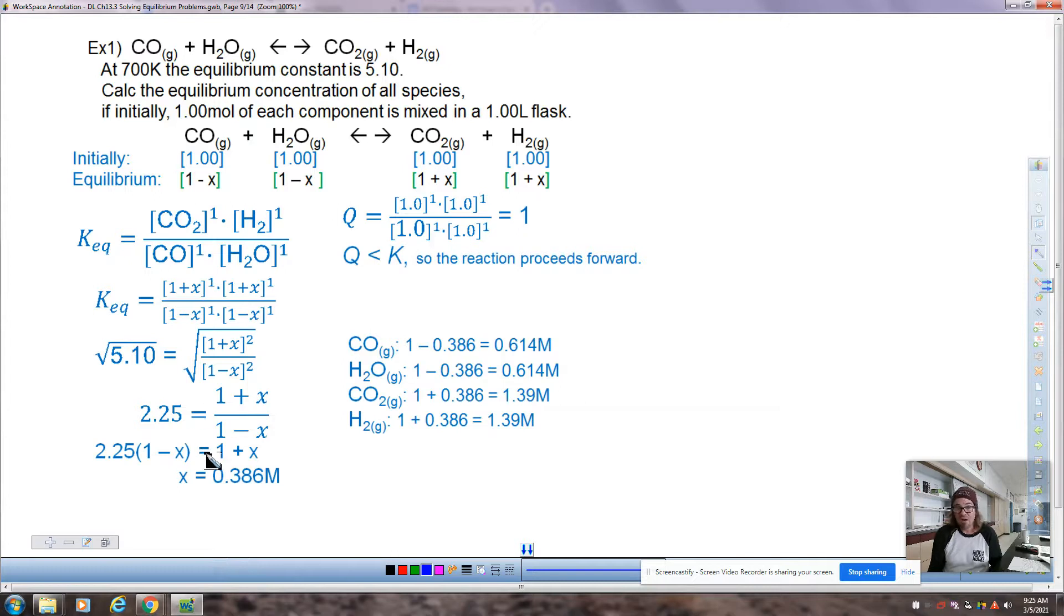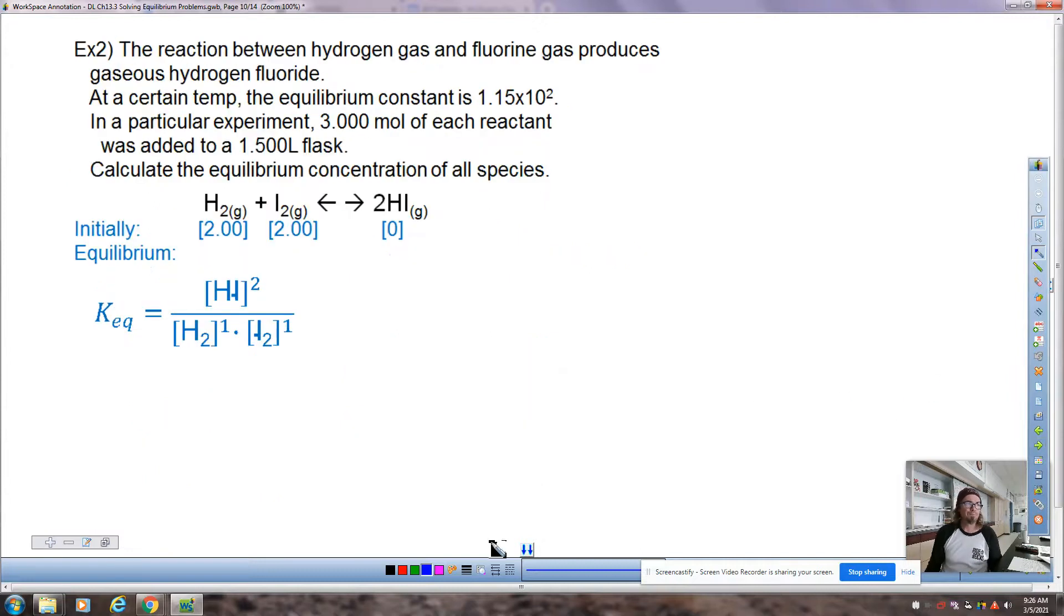You can see all of the work that I did here. I did square root the 5.10 and then distribute the 2.25 into both of those terms, then bring all the X's to one side, all of the numbers the other side to solve for X. Me personally, I use a graphing calculator or I use something like Desmos and graph the function and then look for where it has an X-intercept to find these answers. Something that we might need to talk together about in Zoom. Anyway, plug all those in and we can see the adjustments here. These two decrease down to 0.6, these two increase to 1.39, 1.4.